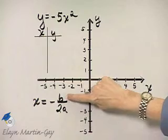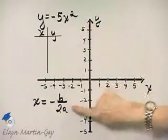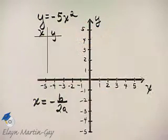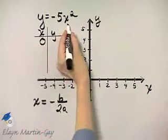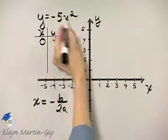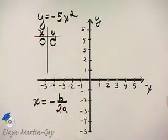b is what? b is zero. That's the coefficient of x and a is negative 5. If you do so though, you'll have an x value of zero and once you plug in that x value of zero, you get a y value of zero.